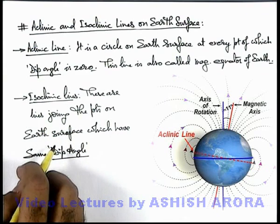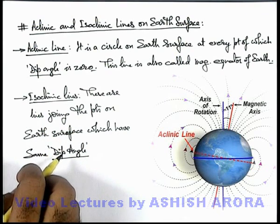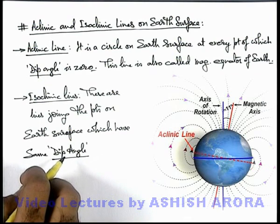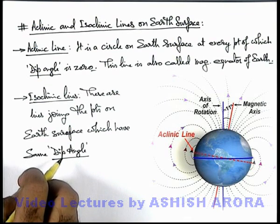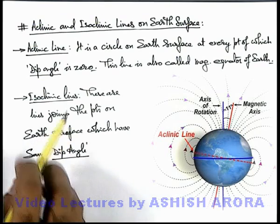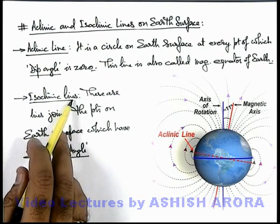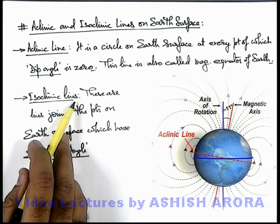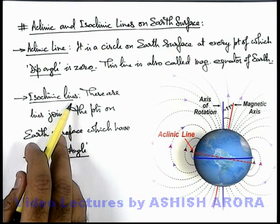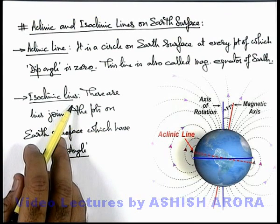As it is difficult to visualize, isoclinic lines can be considered as various circles on earth's surface. As we have understood the aclinic line, you can easily understand what isoclinic lines are. These are circles on earth's surface which are parallel to the magnetic equator.